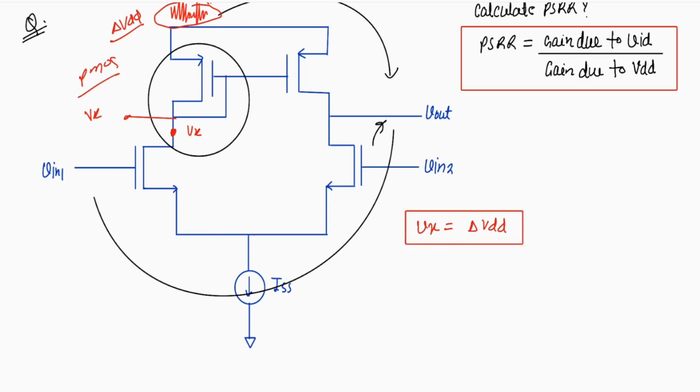So VX will be same as delta VDD. What will be the variation at that source, that will transfer to its drain terminal. And we know that if circuit is pure symmetry, this node follows this node. So now from here we can see that Vout equal to VX equal to delta VDD.